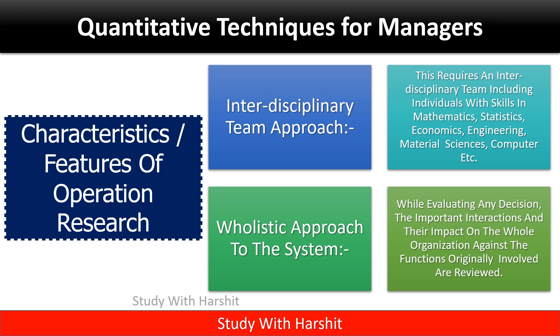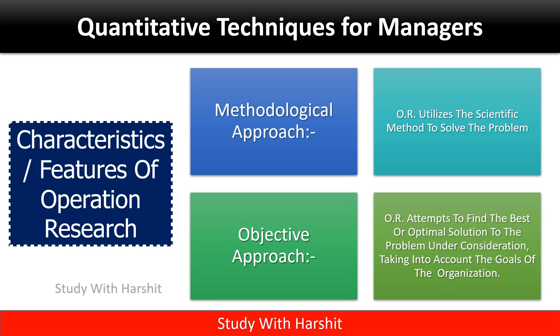Holistic approach to the system: while evaluating any decision, the important interactions and their impact on the whole organization are reviewed. Methodological approach: OR utilizes the scientific method to solve problems. Objective approach: OR attempts to find the best or optimal solution to the problem, taking into account the goals of the organization.